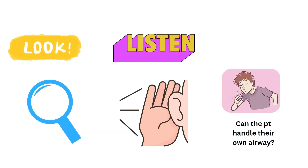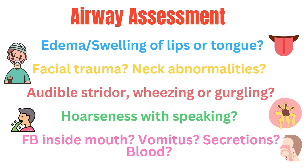We need to look and listen, as well as determine if the patient can handle their own airway. What do I mean by that? If they started vomiting or had increasing secretions, could they handle them without assistance or would they choke? A quick reason why a patient could not handle their own airway would be decreased mentation. Do you see any visible edema or swelling to the lips and tongue? Any abnormalities to the neck or perhaps facial trauma? Can you hear audible stridor, wheezing, or gurgling sounds? These could indicate an airway obstruction from a foreign body, secretions, vomit, or even the patient's own tongue.